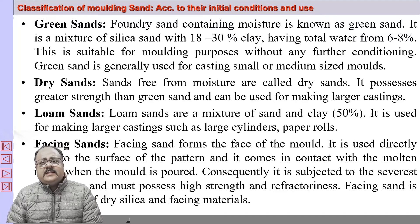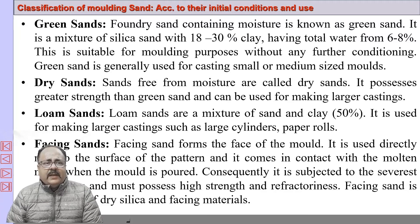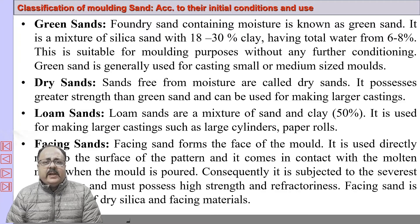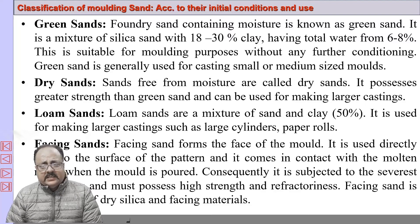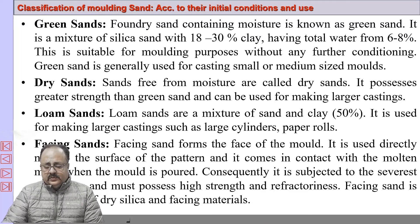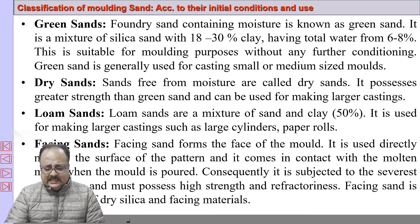We can also classify sand based on initial condition and use. Green sand has high moisture content — around 6 to 8 percent moisture and 18 to 30 percent clay. Dry sand is free from moisture and possesses greater strength than green sand. Loam sand is 50 percent clay and 50 percent sand. Facing sand forms the face of the mold, is used directly next to the surface of the pattern, comes in contact with molten metal, and therefore must have high refractoriness — dried silica sand and coal powder are used.